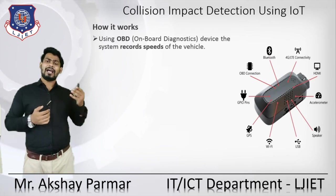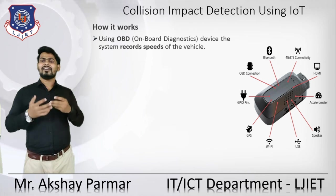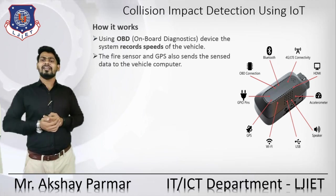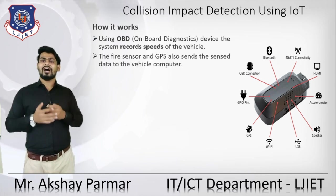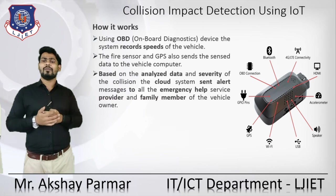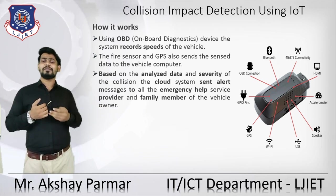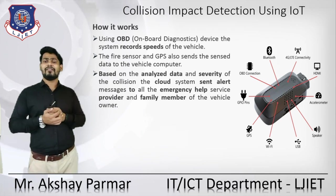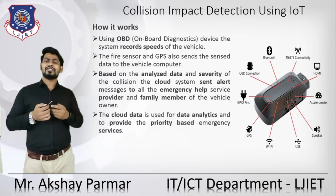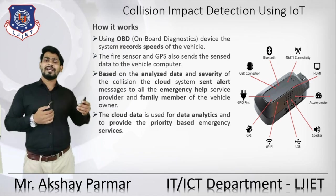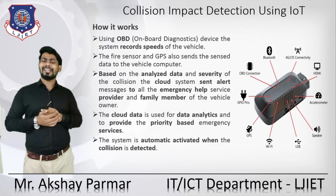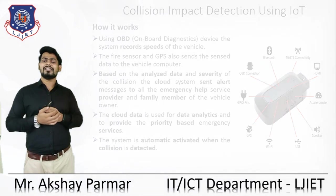Using the OBD — onboard diagnostics — the system records the speed of the vehicle. The fire sensor and GPS also send data to the vehicle computer. Based on the analyzed data and severity of the collision, the cloud system sends an alert message to all emergency health service providers and family members of the vehicle owner. The cloud data is used for data analytics to provide priority-based emergency services. The system is automatically activated when a collision is detected.